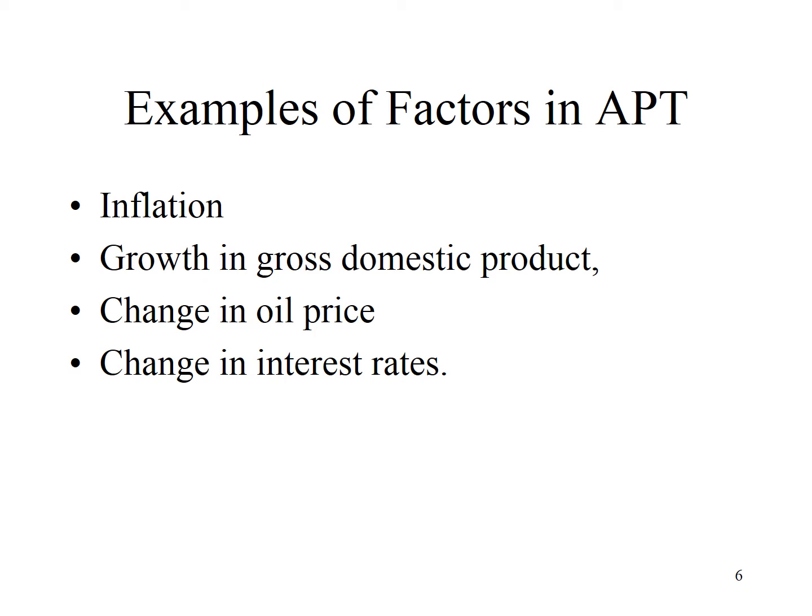The APT does not specify what the factors are. For example, a company's stock return may be affected by changes in oil price. Most transportation companies, such as airlines, would have a negative sensitivity to a change in oil price. Some stocks will be more sensitive to a particular factor than other stocks. For example, an oil company could be more sensitive to an oil factor than a consumer industry.